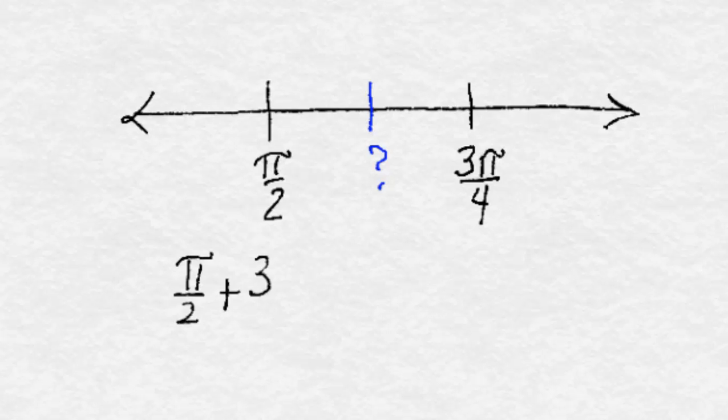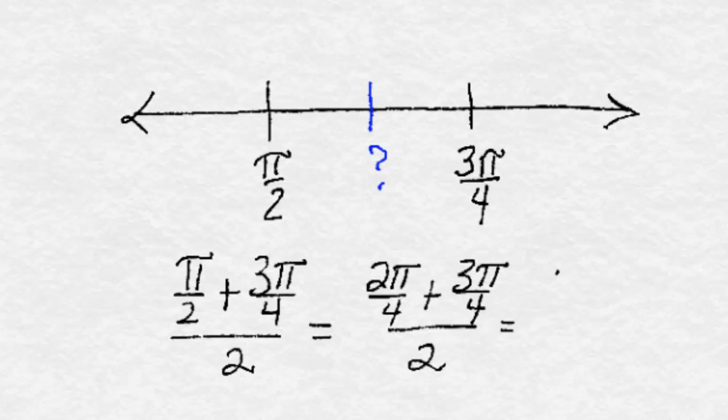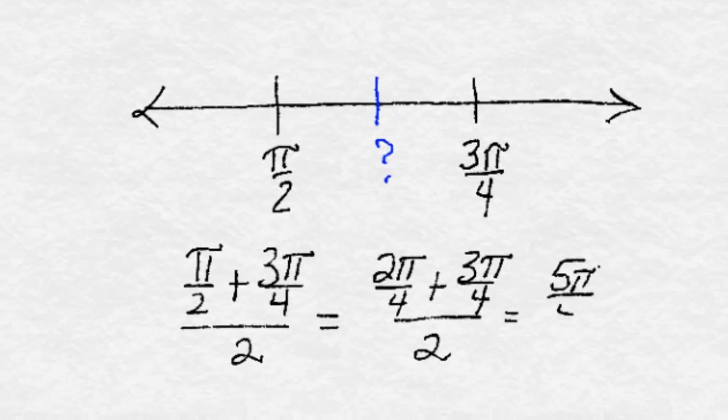Pi over 2 plus 3 pi over 4 divided by 2. Pi over 2 is the same as 2 pi over 4. 2 pi over 4 plus 3 pi over 4 divided by 2 gives us 5 pi over 4 divided by 2.